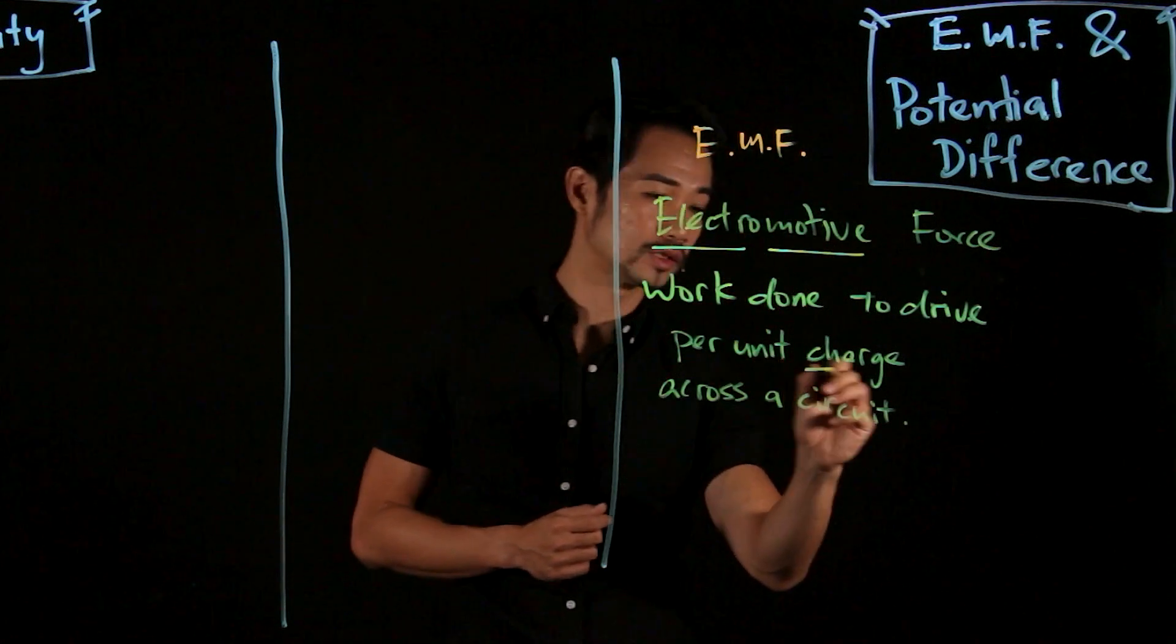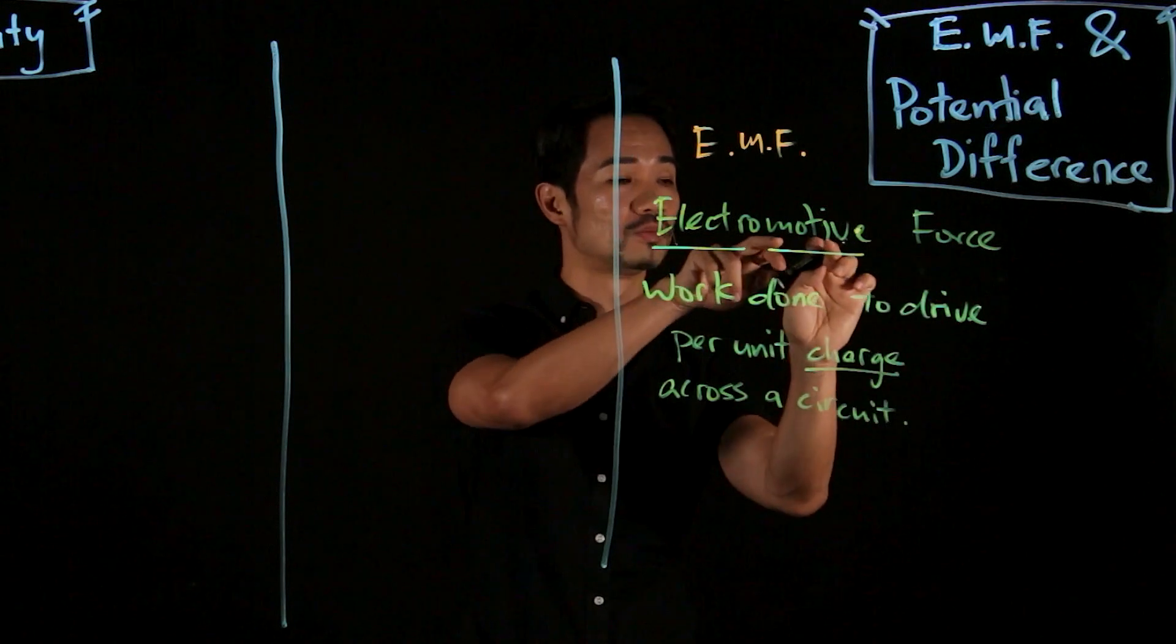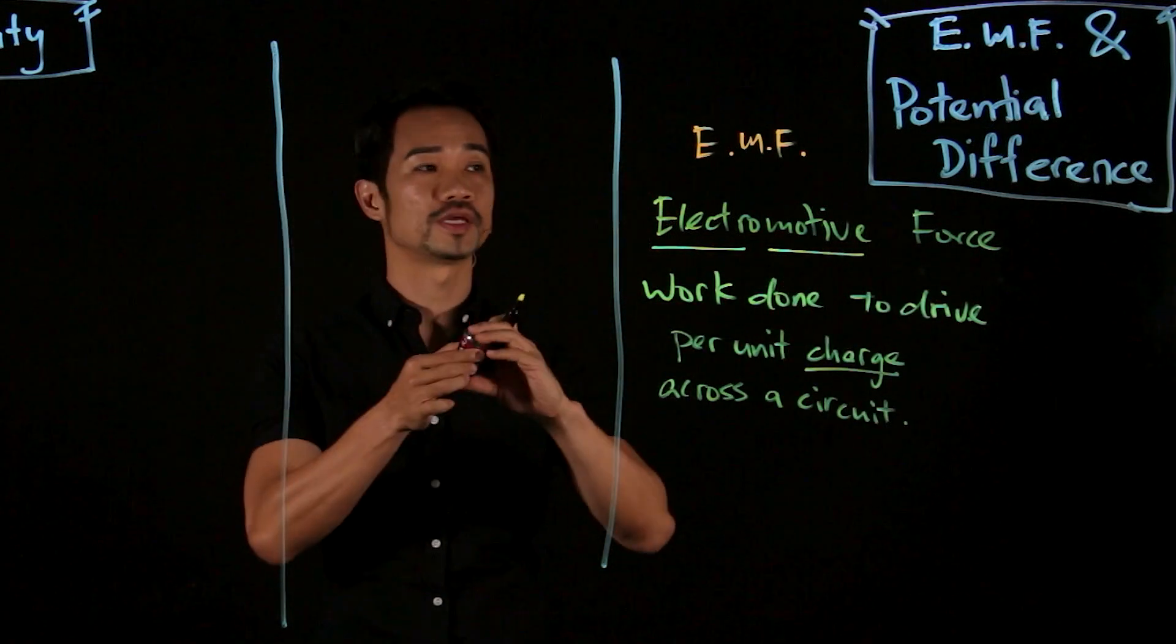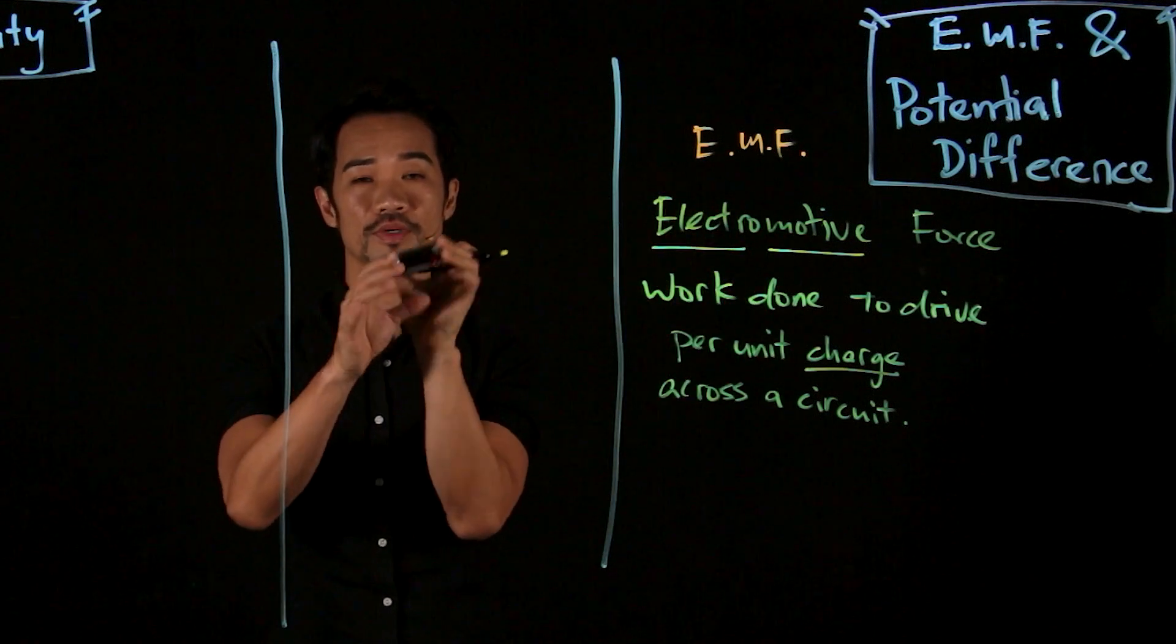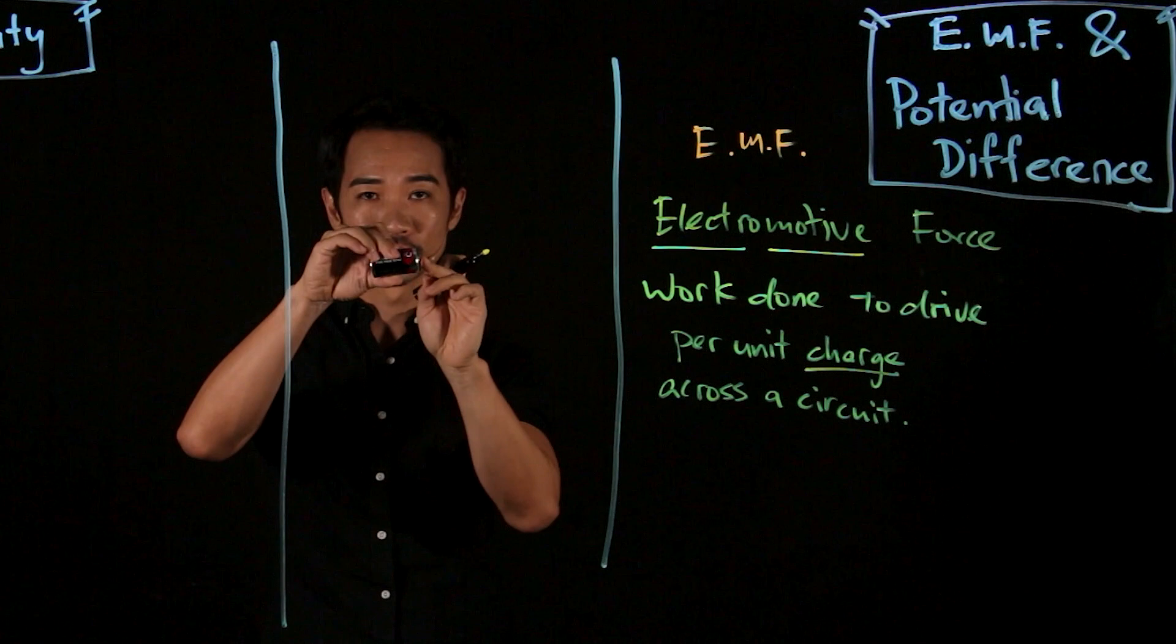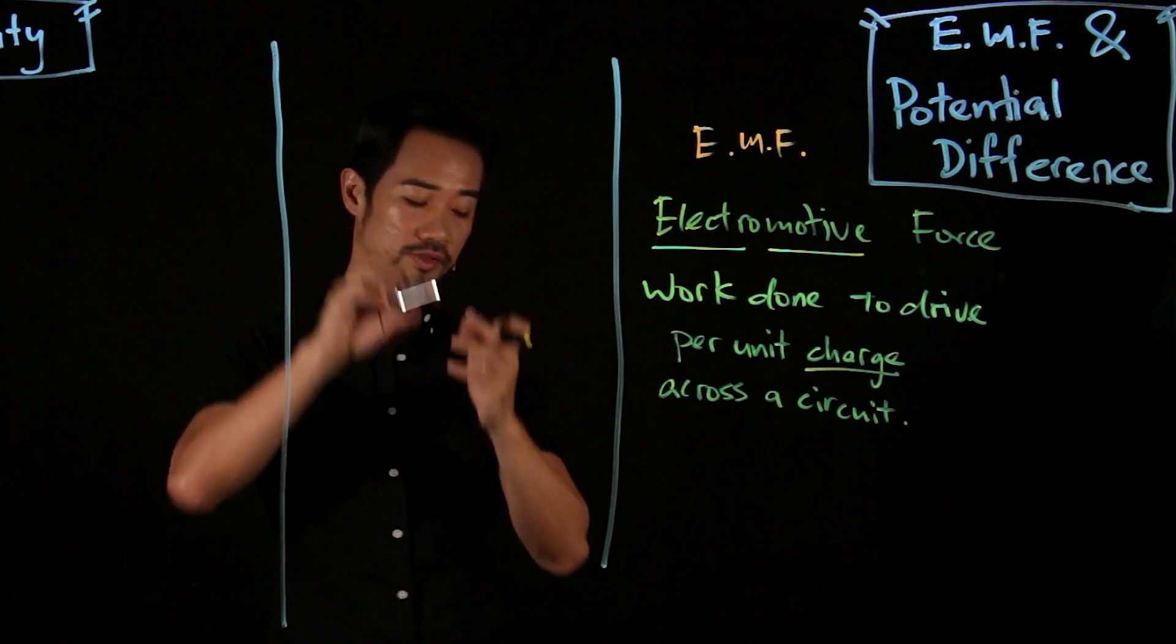So you see, to drive per unit charge—that is the electron—to drive, which is the movement. So a battery has electromotive force. The chemical energy inside will produce an EMF that drives the electrons around the circuit.